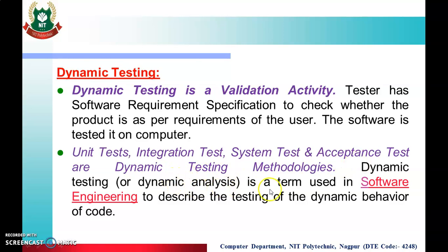Dynamic testing or dynamic analysis is a term used in software engineering to describe the testing of the dynamic behavior of the code. For static testing we use inspection, walkthrough, and reviews. For dynamic testing we use unit testing, integration testing, system test, and acceptance test. We have seen in the V&V model that in validation there are four phases: unit test, integration, system, and acceptance. These are the actual levels of testing where software is actually executed and tested. This type of testing is called dynamic testing.